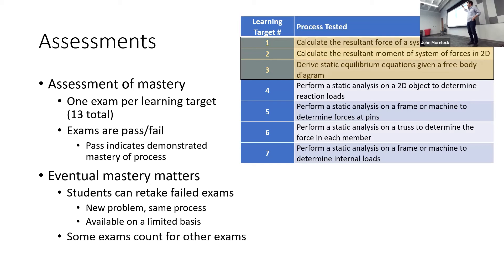Some exams count for other exams. The first three learning targets are basically the building blocks of all of the next four. If a student fails those first three but passes exams four, five, six, or seven — which require demonstrating those building blocks — they also get credit for the first three. There's no point in making them go back and redo them specifically when they've already shown that understanding by passing the harder exams.